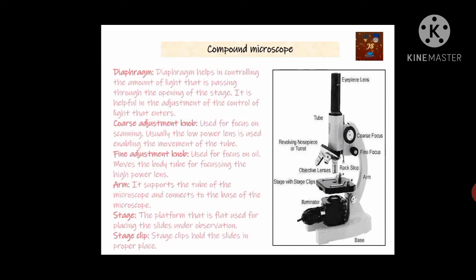The diaphragm is considered an optical part of the microscope. It controls the amount of light passing through the opening of the stage, meaning it controls how much illumination falls on the specimen. The coarse adjustment screw is used to focus the specimen placed on the stage so that it can be seen clearly. The fine adjustment screw moves the body tube by focusing the high power lenses and is very important for use with high power objectives.